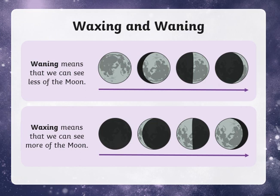Once we go in to talk more about the moon phases, there are two terms we are supposed to be aware of: waning and waxing. Waning means that we can see less of the moon, while waxing means that we can see more of the moon.